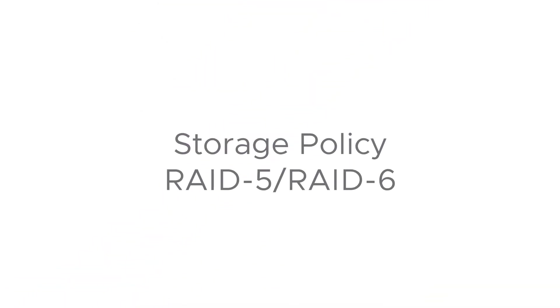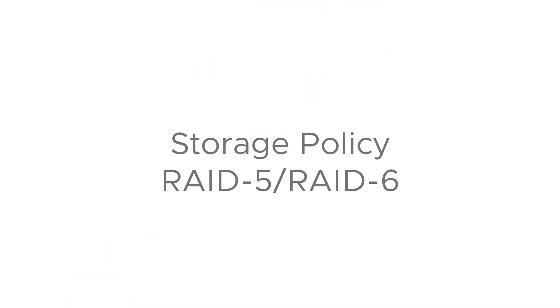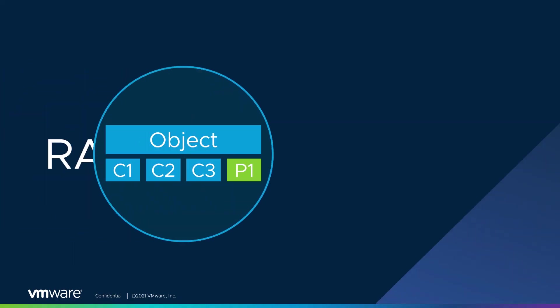Let's talk about our RAID 5 and RAID 6 policies. In our RAID 1 video, we introduced a new acronym called FTM — our Failure Tolerance Methods. We've got mirroring and we've got erasure coding. Our RAID 5 and RAID 6 policies fall underneath erasure coding. We're going to start off by talking about our RAID 5 policy first.